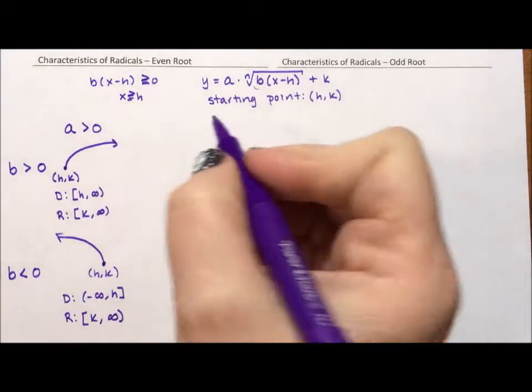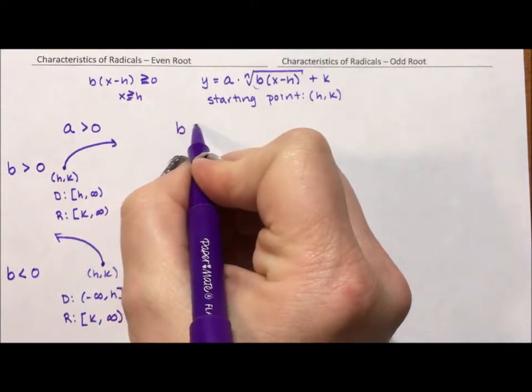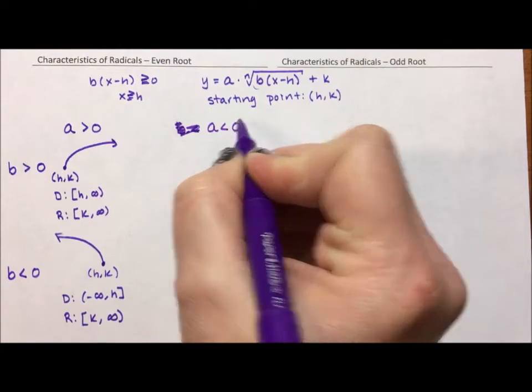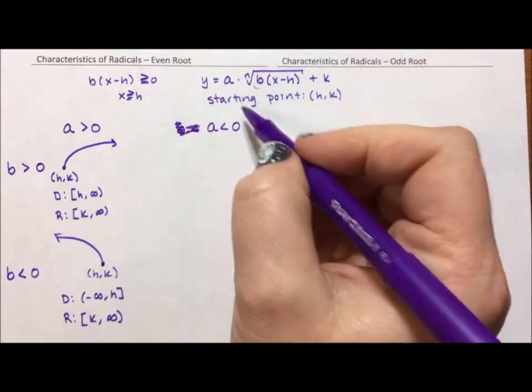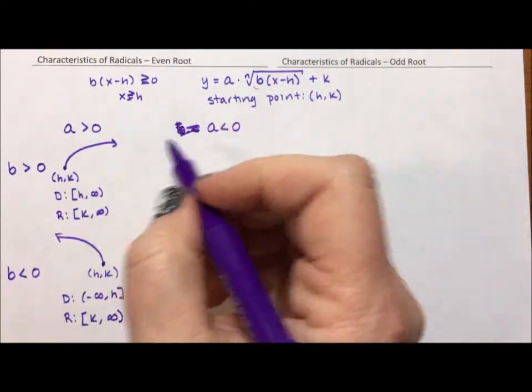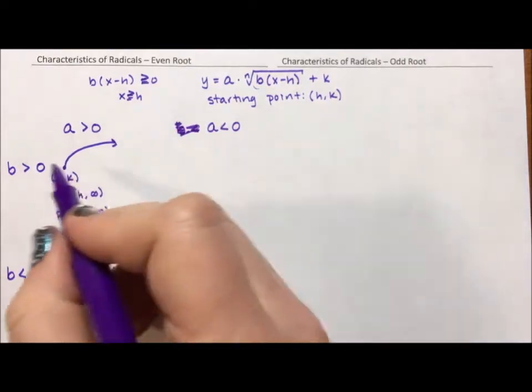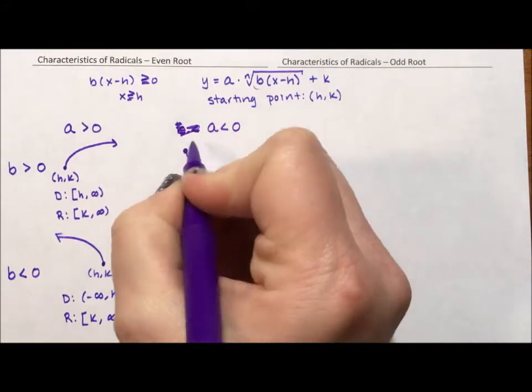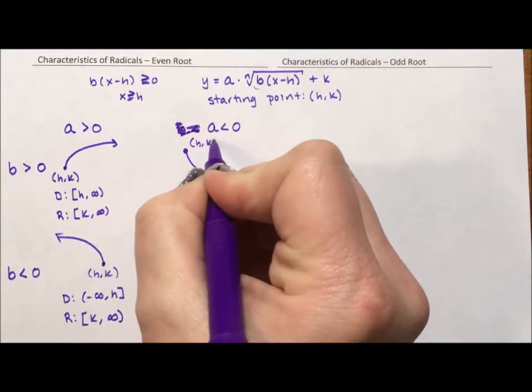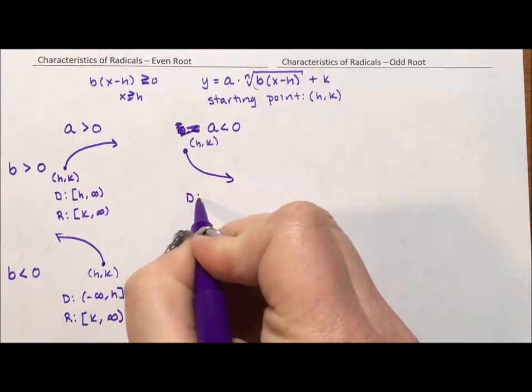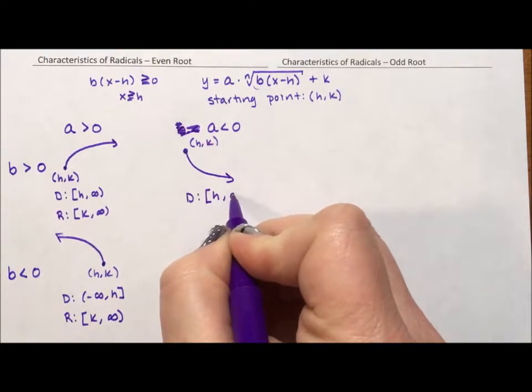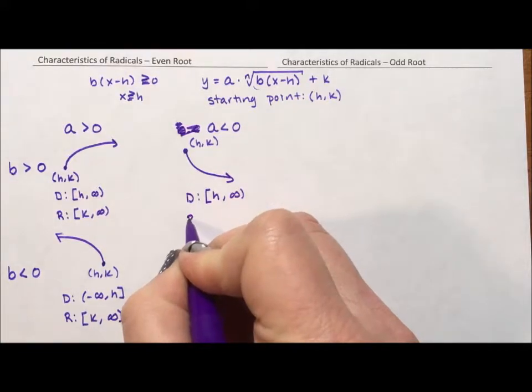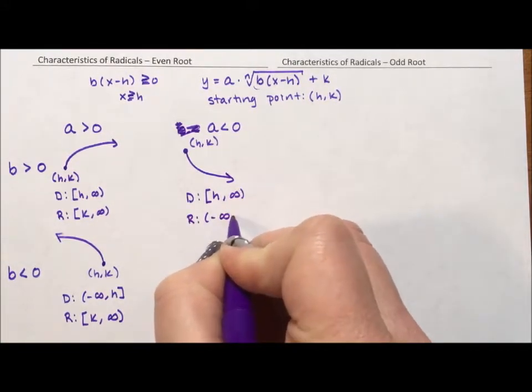Okay. That's what happens when a is positive. What about when a is negative? Well, if a is negative, the graph points down. So if a is negative, it's pointing down and b is positive, it's going forward. Our graph is going to look like this with our starting point of (h,k). Our domain is going to be from h to infinity because we're going forward. Our range, because we're going down, is going to be negative infinity to k.